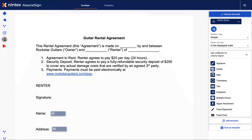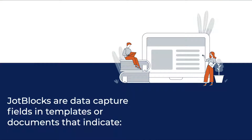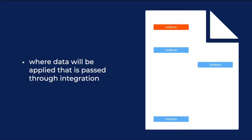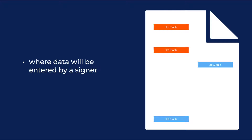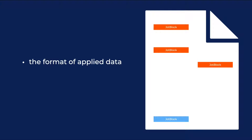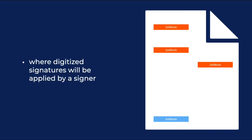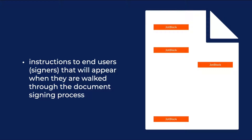In this video we will learn the basics of getting started with jot blocks in Nintex AssureSign. Jot blocks are data capture fields in templates or documents that indicate where data will be applied that is passed through integration, where data will be entered by a signer, the format of applied data, and where digitized signatures will be applied by a signer, as well as instructions to end users that will appear when they are walked through the document signing process.